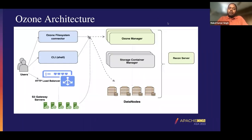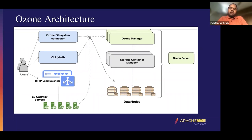Let's start with the Ozone architecture. I'll start by giving a basic intro about Ozone. Ozone is an object store which we have designed. One of the purposes was to make sure we designed an object store which was highly scalable. In our internal testing, we have been able to have more than 10 billion objects in Ozone, and it has proved to be a storage system which can really store a large number of objects.